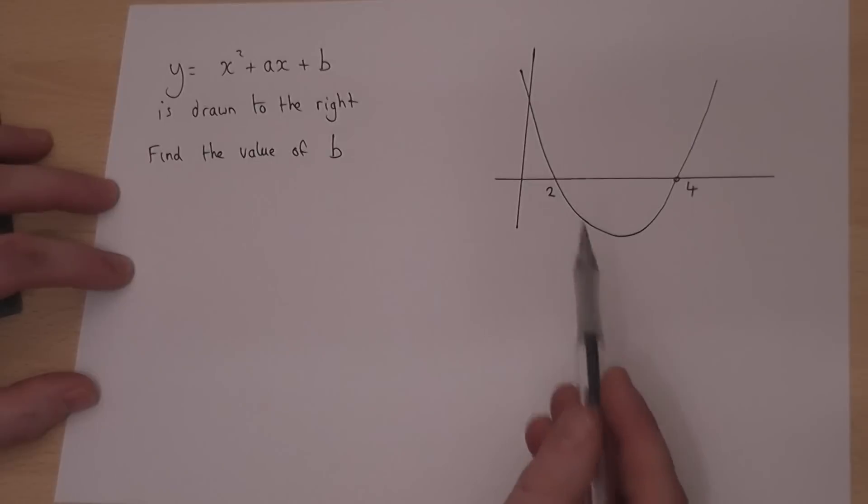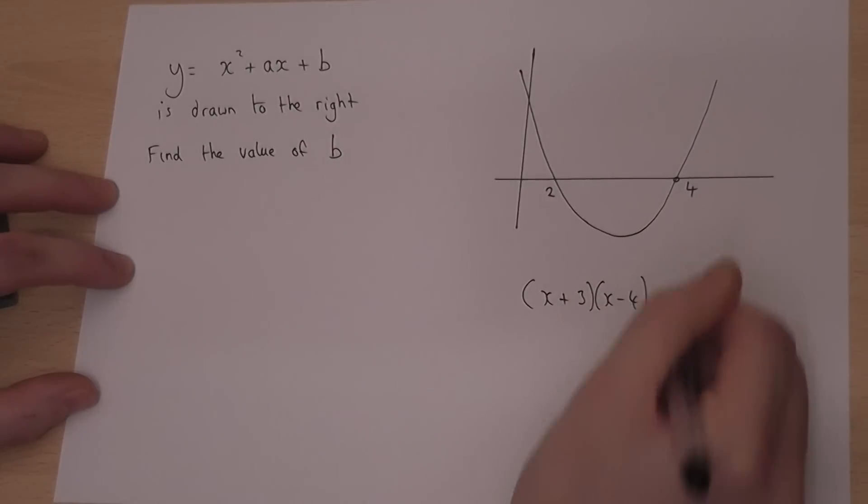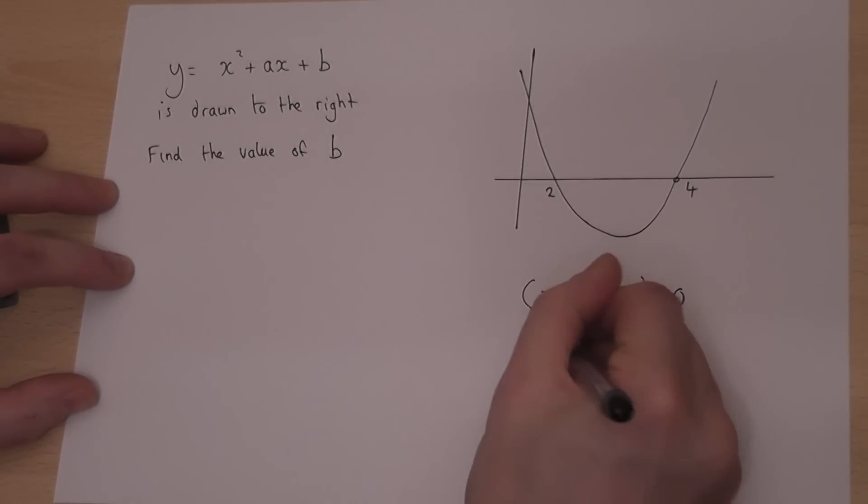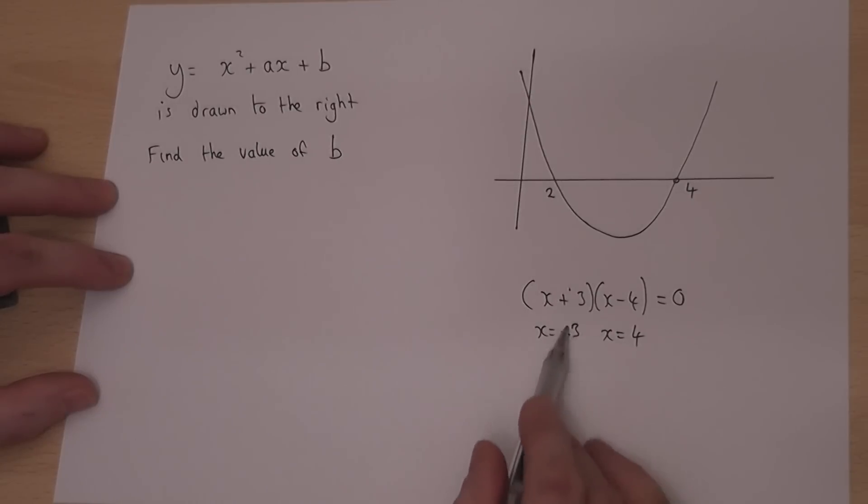Now we know, if I can take a step back, that if you're asked to solve an equation of this type, then the solutions would be x equals minus 3 and x equals 4. So if you can factorize, you can find the solutions, and of course they have a different sign.